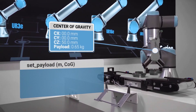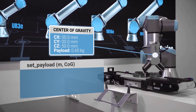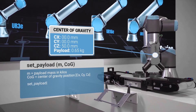The brackets contain two parameters: the mass or payload in kilograms, and the coordinates for the center of gravity. First, write the new payload in kilograms. Then, in square brackets, type in the location of the new center of gravity on the X, Y, and Z axes.